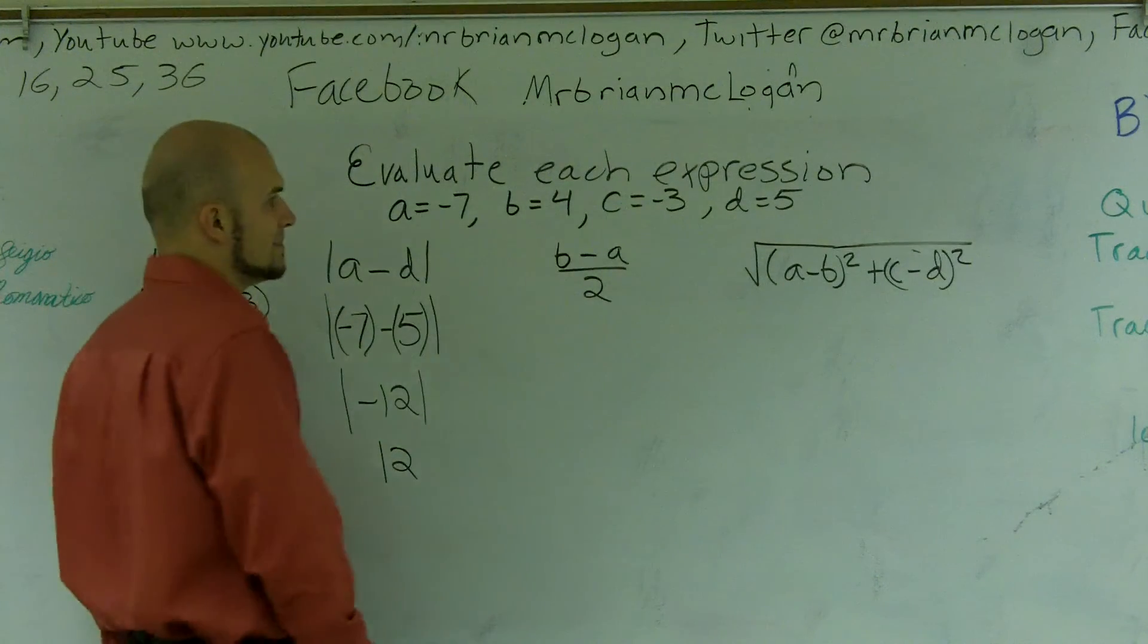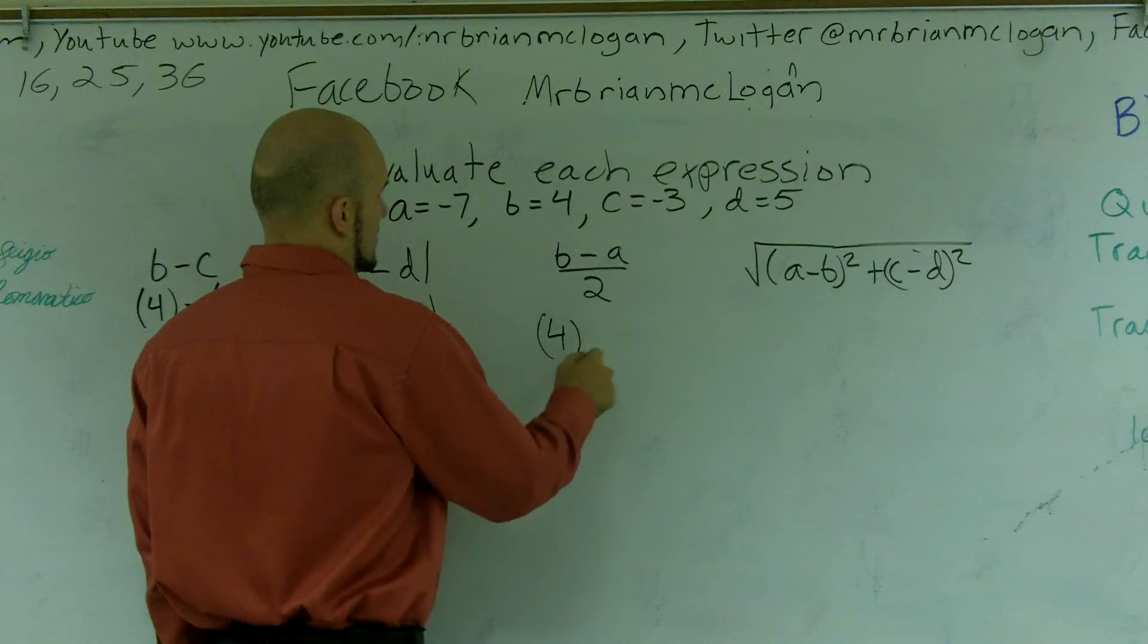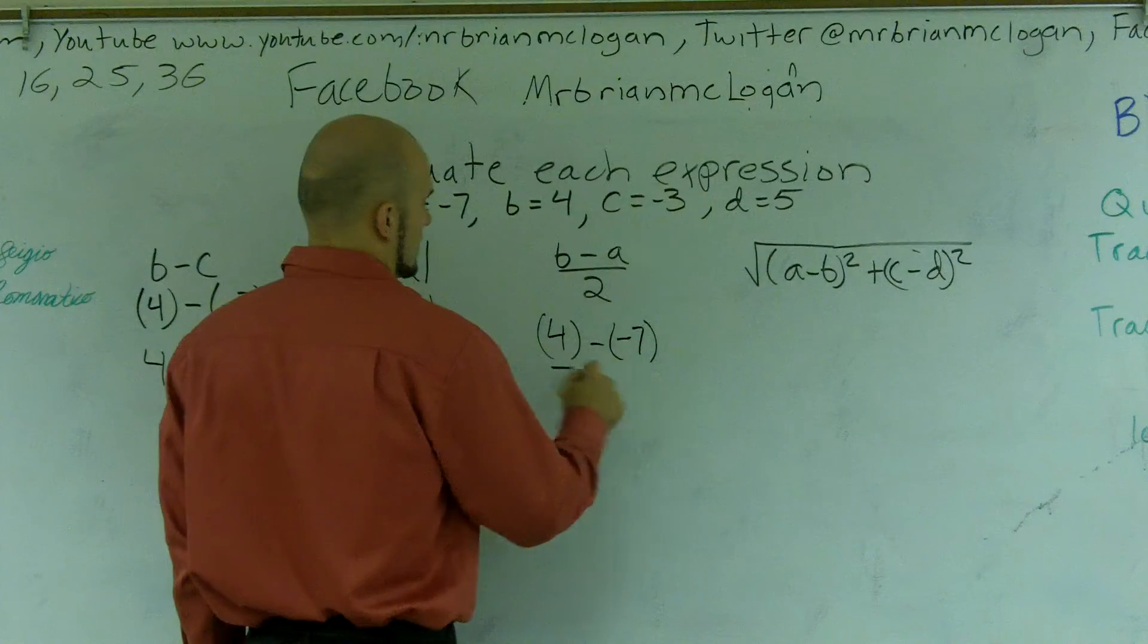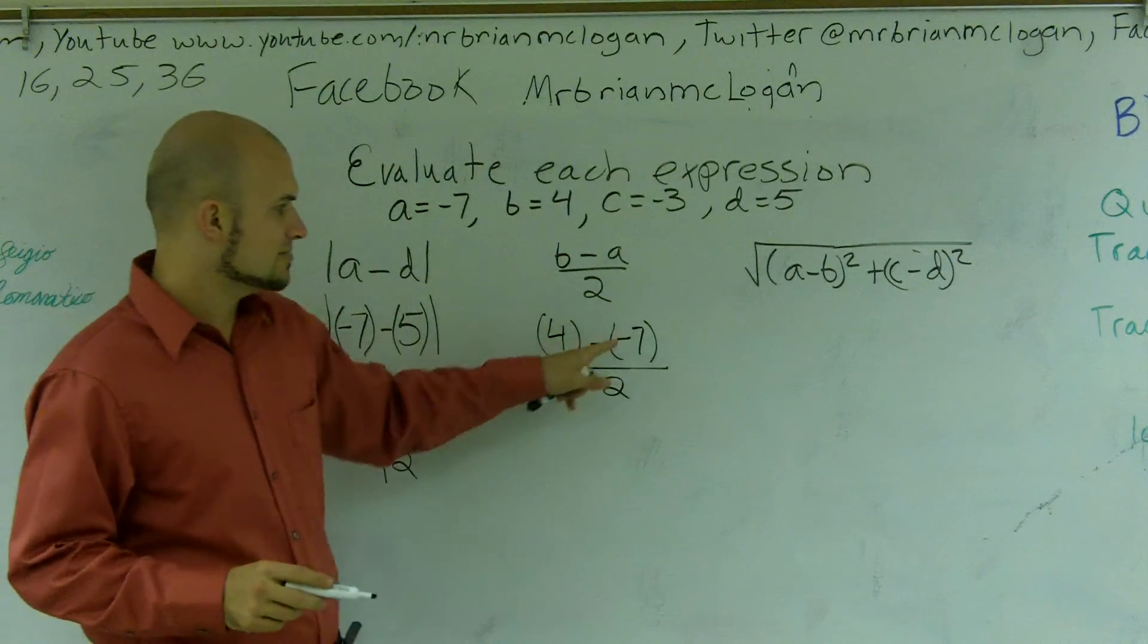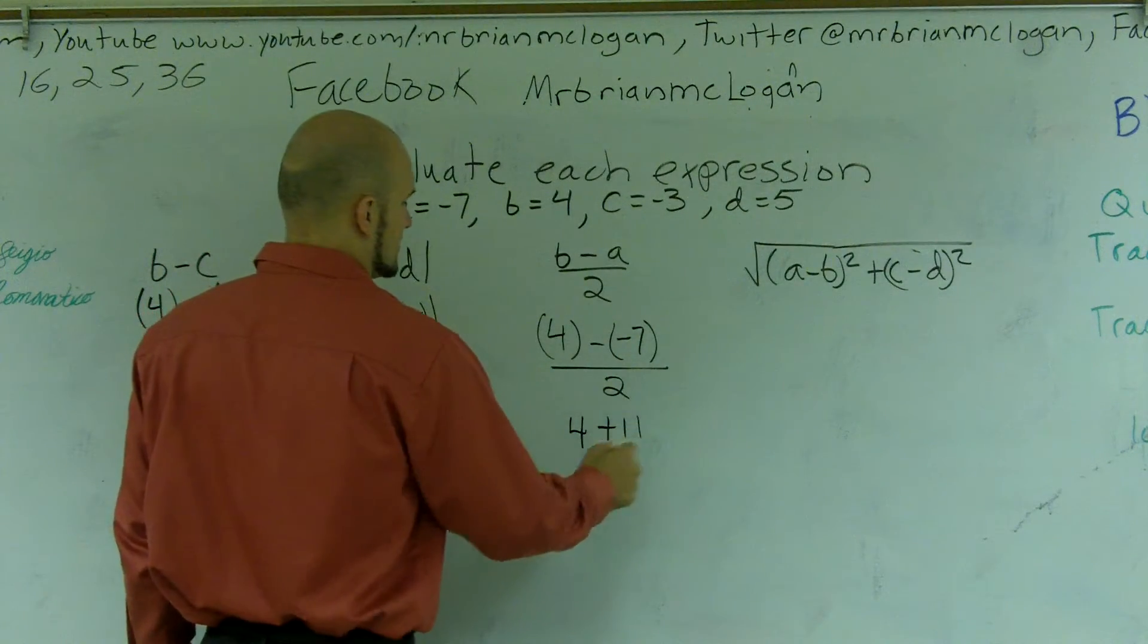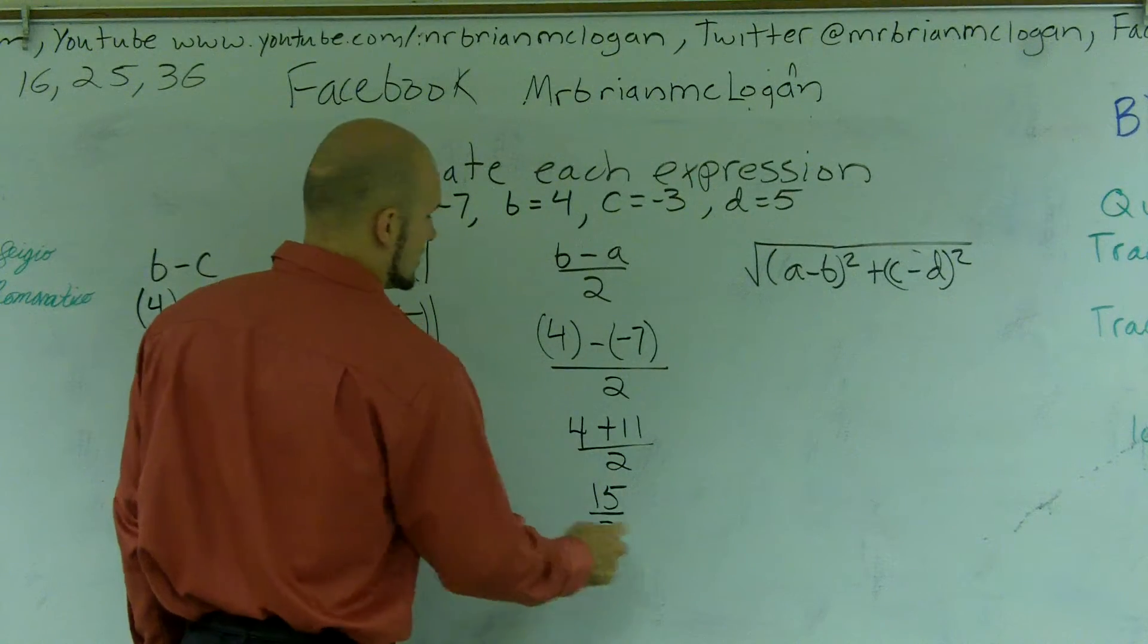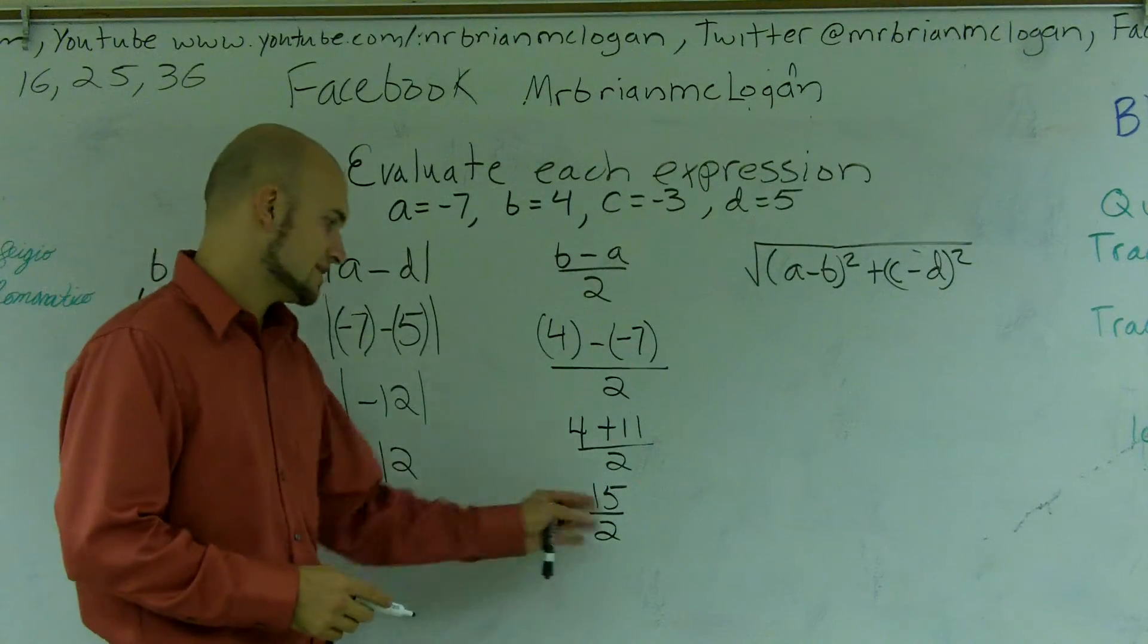Again, now here I have b minus a divided by 2. b is 4 minus a, which is a negative 7, all over 2. And again, guys, this is helpful because when you put them in parentheses, you notice that this is a double negative. So it's going to be 4 plus 11 divided by 2, which is 15 divided by 2, which I'm going to leave as a fraction. I'm not going to put that at 7.5, I'd like to leave it as a fraction.